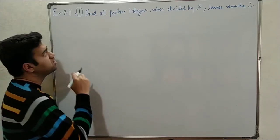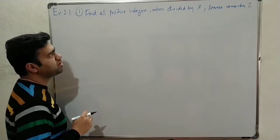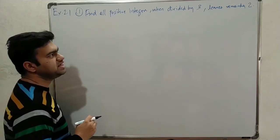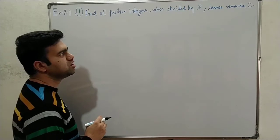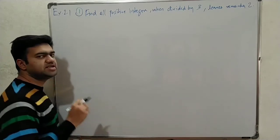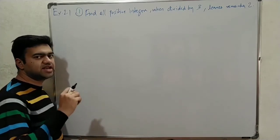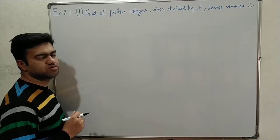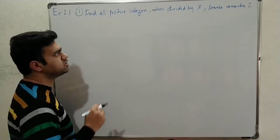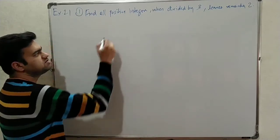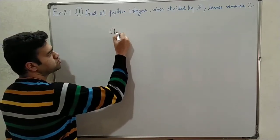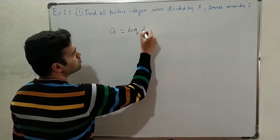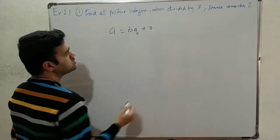Let's go to the first sum: Find all positive integers when divided by 3 that leave remainder 2. That's why, if you look at an integer divided by 3 with remainder 2, Euclid's Division Lemma formula is A = BQ + R.